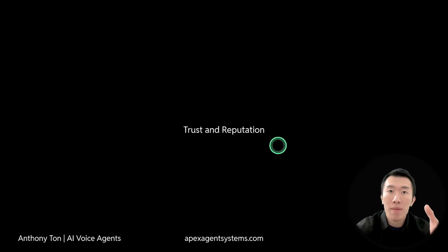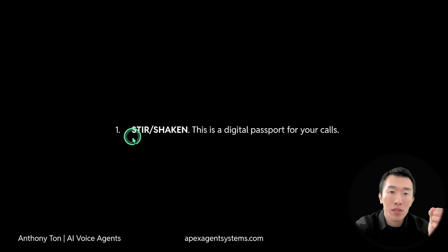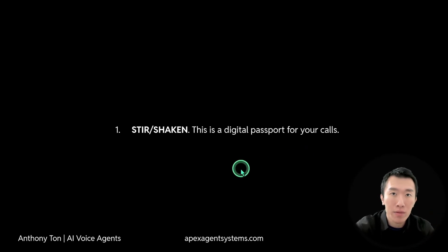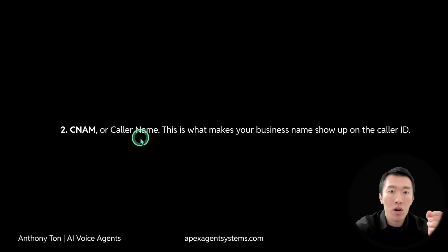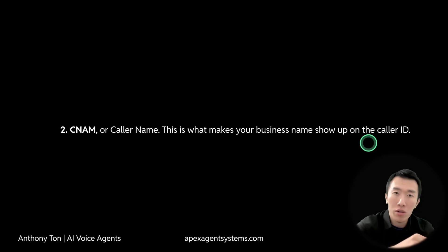Before we touch a single node in N8N, we need to talk about the most important part of the entire process: trust and reputation. You could have the best AI in the entire world and it wouldn't mean a thing if your numbers are getting labeled as spam likely. The first aspect is called STIR/SHAKEN — this is like a digital passport for your calls. You register your business with your voice provider such as Twilio, and they give you your A-level attestation, which verifies you and prevents your calls from being labeled as spam. Number two is CNAM, or caller name, which makes your business name show up on the caller ID, greatly increasing pickup rates and conversion rates.